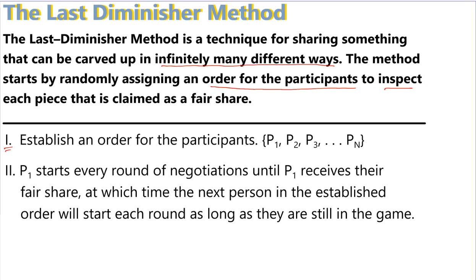Here is the first rule for this method: establish an order for the participants. We'll call them player one, player two, player three, all the way up to the nth player. The first player will start every round of negotiations until player one receives a fair share, at which time the next person in the established order will step up as the lead negotiator.